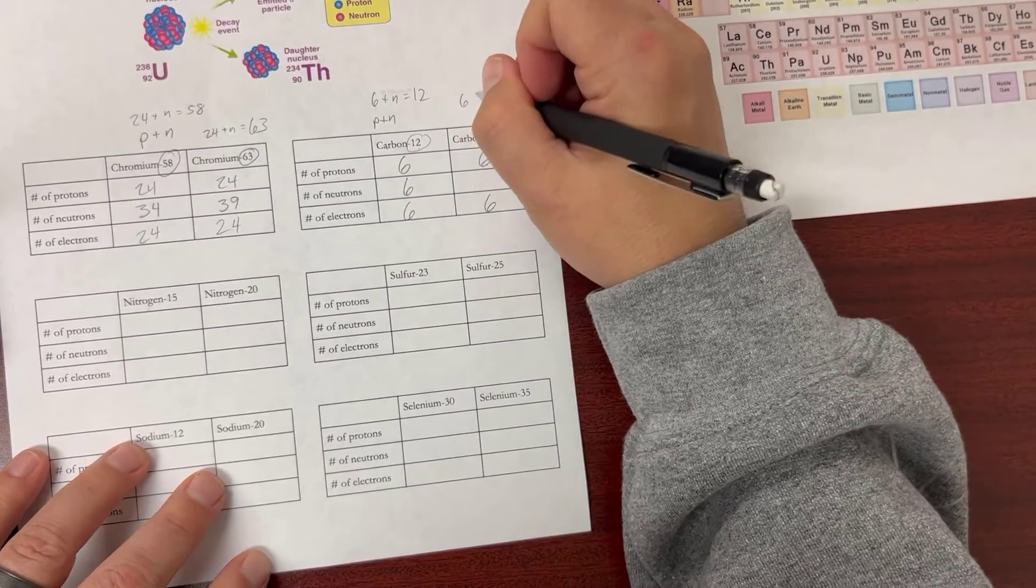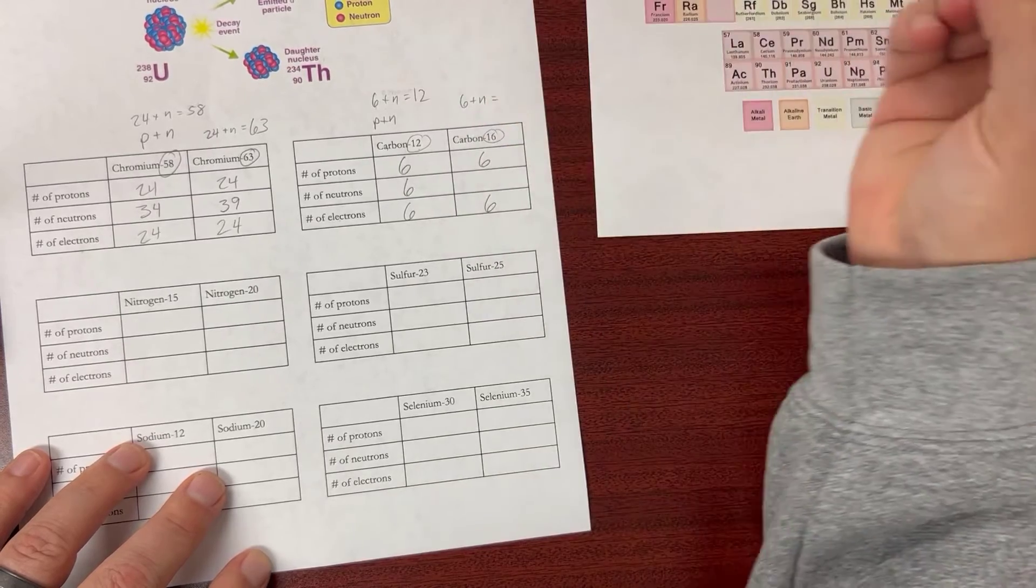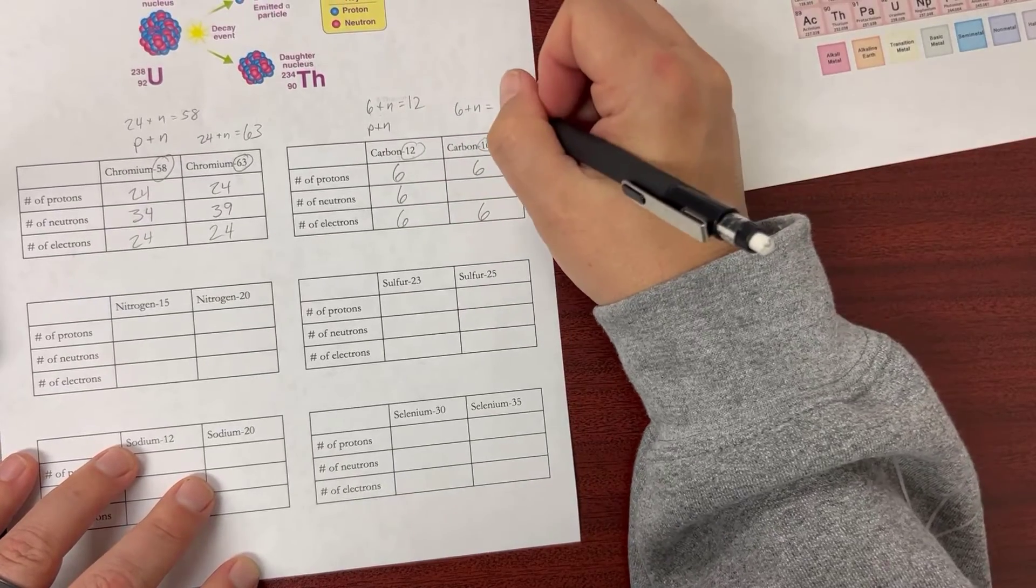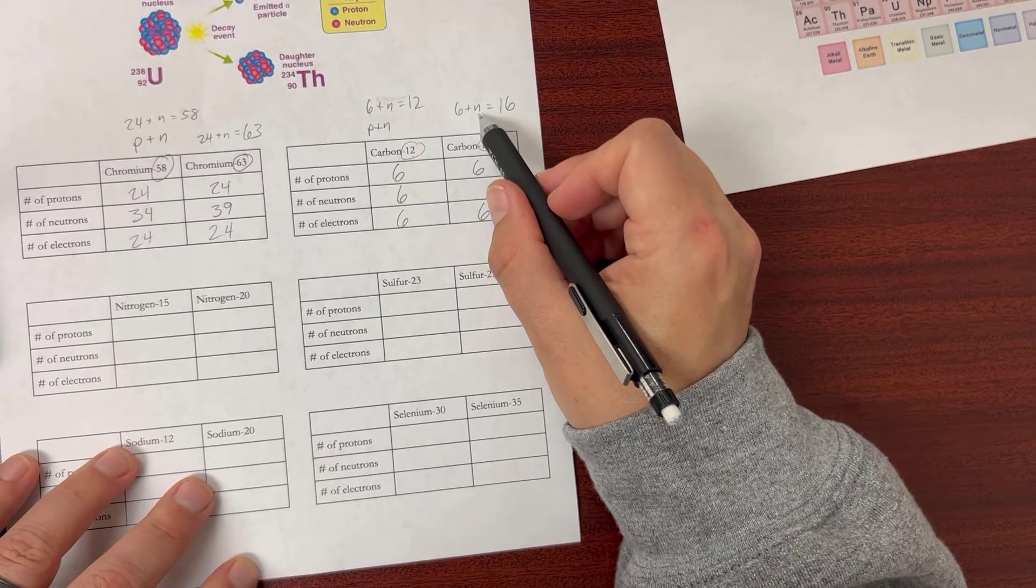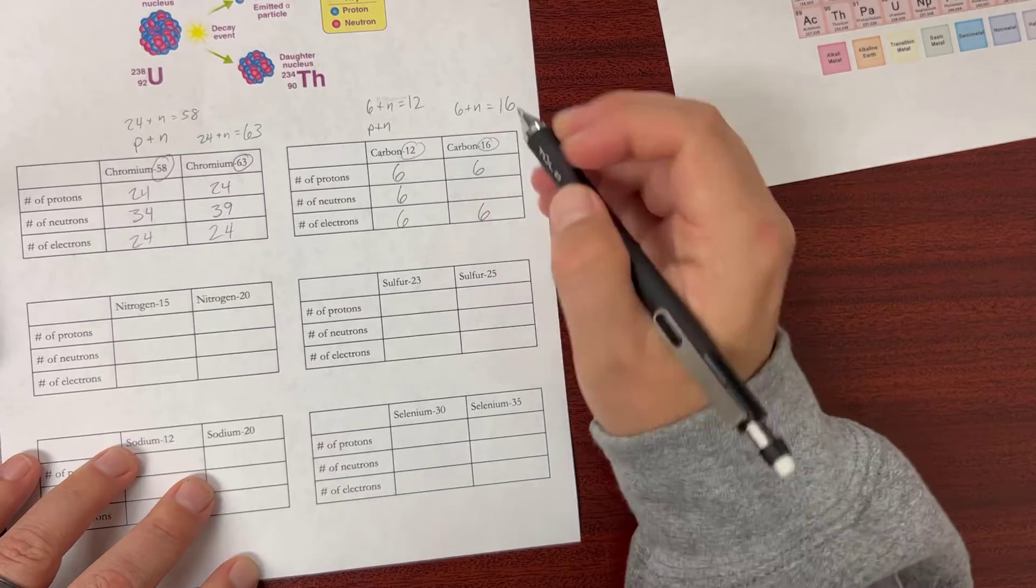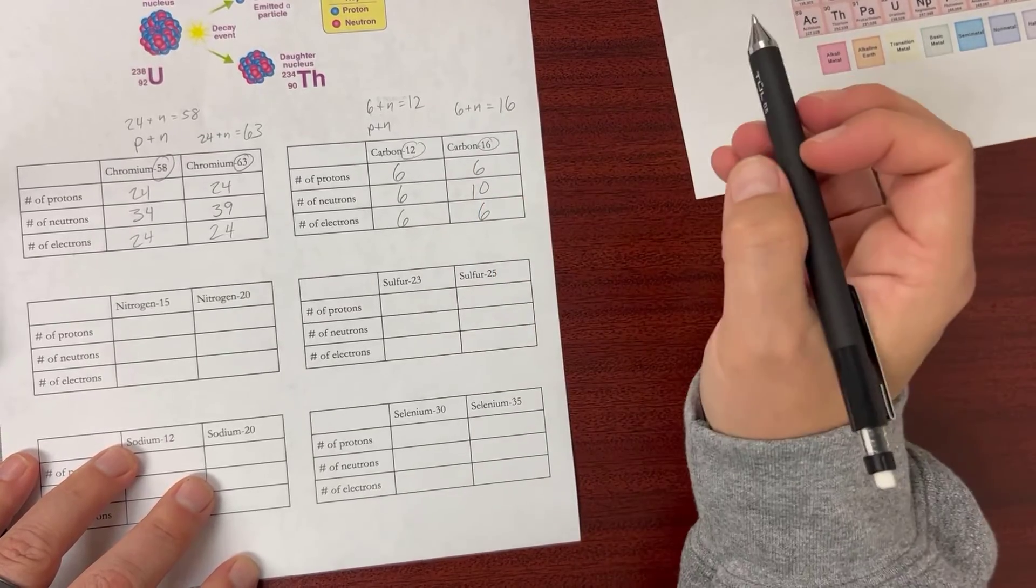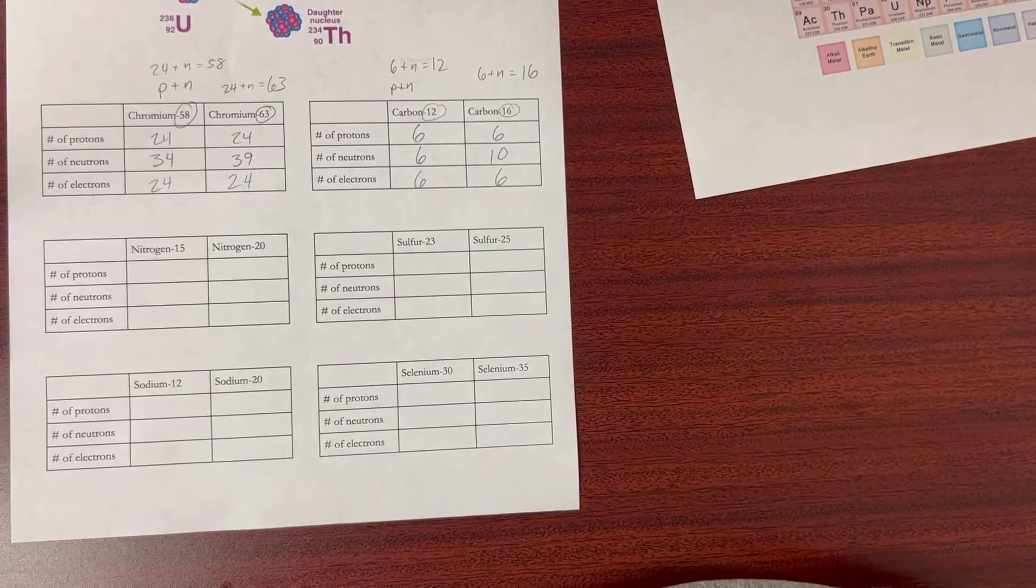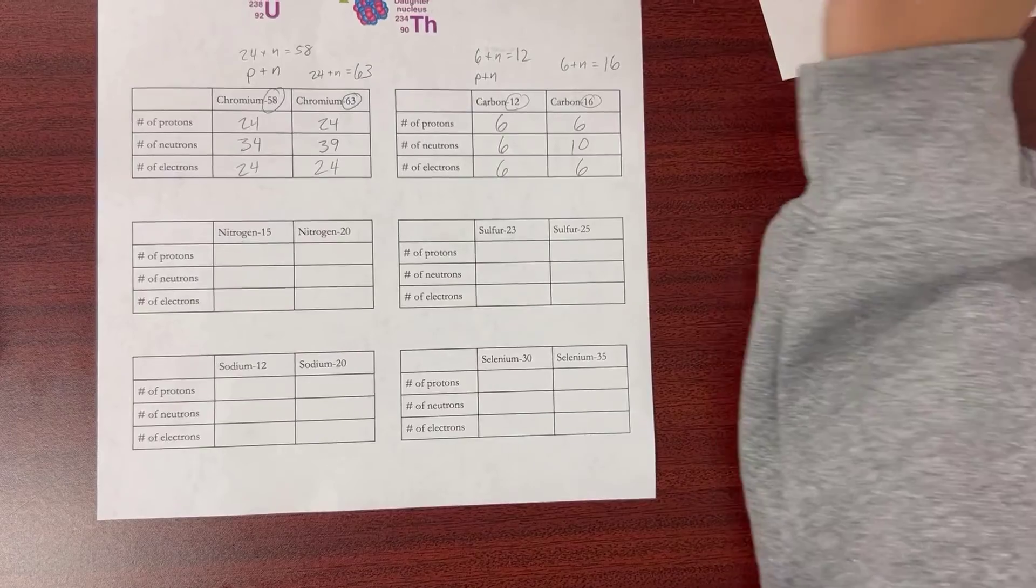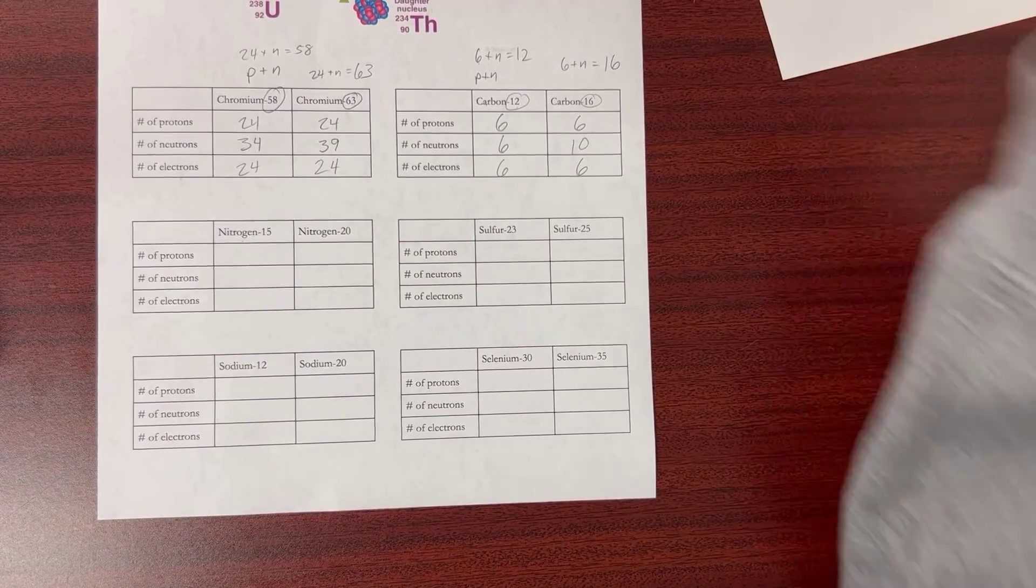So six protons plus some neutrons equals 16. Again, I can do the math in my head—there are 10 neutrons because 10 + 6 = 16. So 10 neutrons. Do that for the rest of these down here, and that'll get us thinking about different types of elements that are radioactive. Thank you very much.